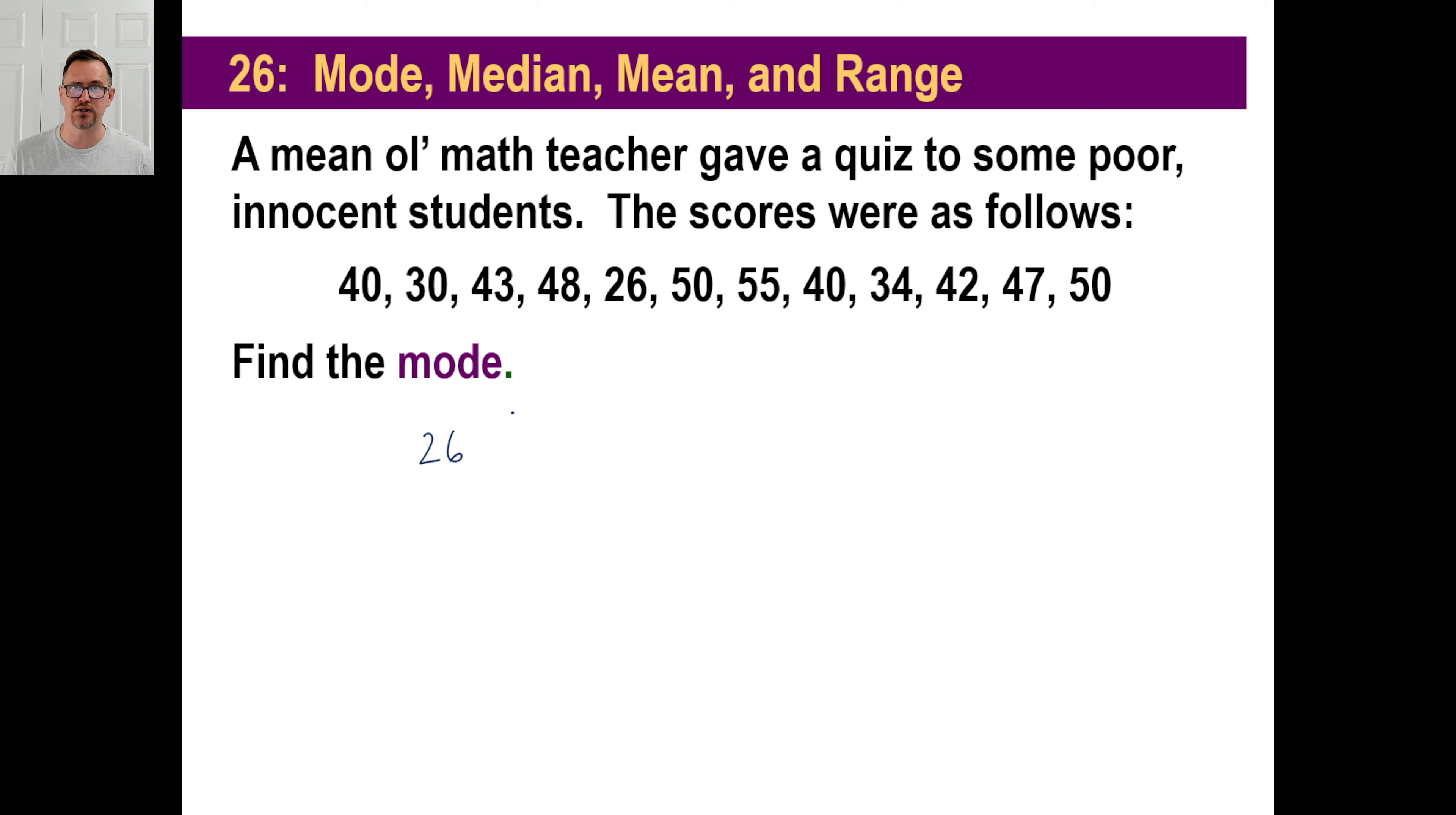You got a math book. If it's yours, you can use a pencil and kind of do like this. Don't do that like a permanent magic marker or anything. 26, and then the next one is going to be 30. And then it looks like 34. And let's speed this up a little bit. Let's see here. 40. There's a 40. And there's another 40. So two 40s.